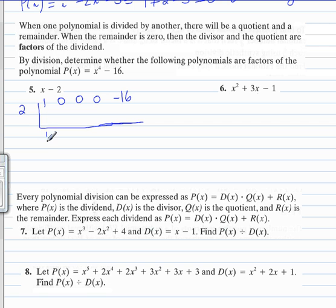Bring down the 1, multiply 1 by 2 and put it here, and add down. That gives us 2. Repeat this process: 2 times 2 is 4, add down. 4 times 2 is 8, add. 8 times 2 is 16, add. This is our remainder.